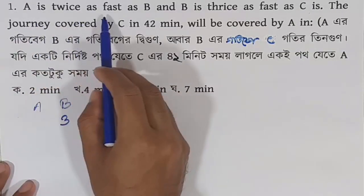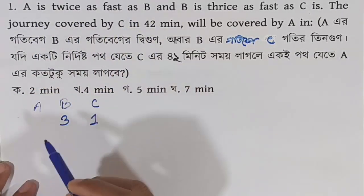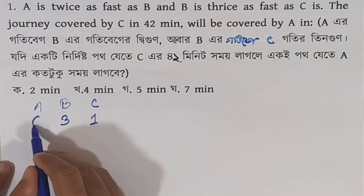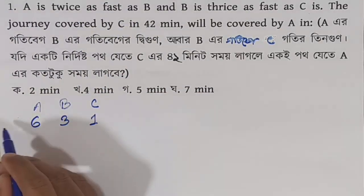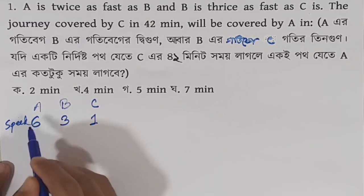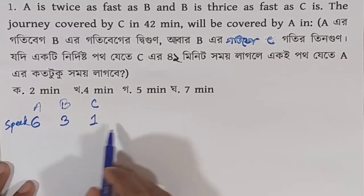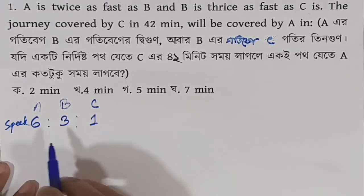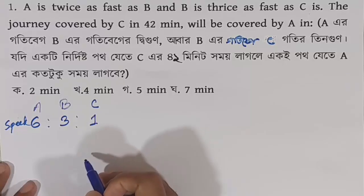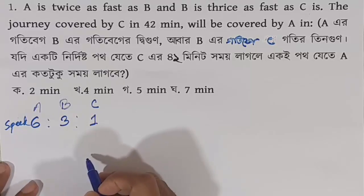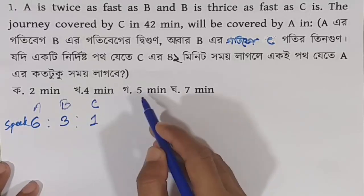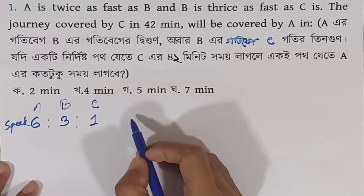So A is twice as fast as B, giving us speed values of 2, 2. The speed ratio comes out to 2, 2, making the combined ratio 1, 2, 6. This is our speed ratio. We know that time and speed have an inverse relationship — time is inversely proportional to speed.